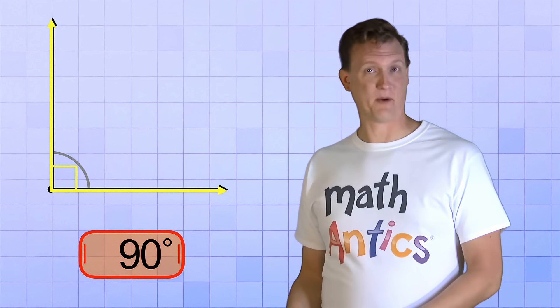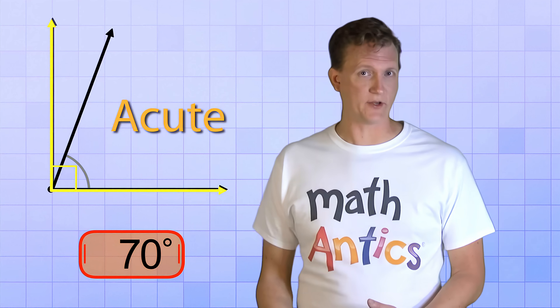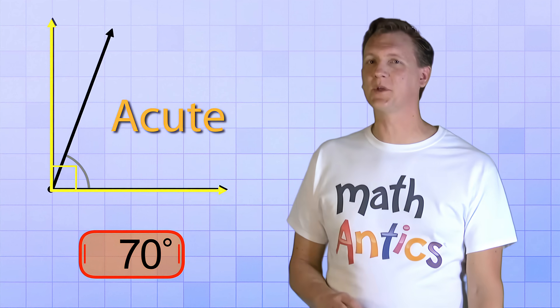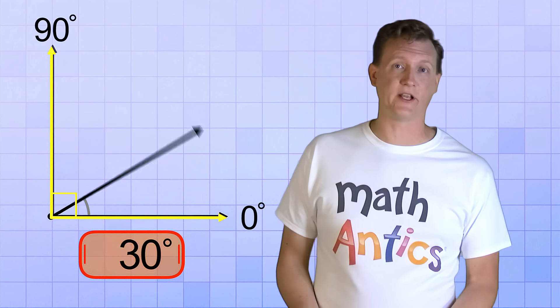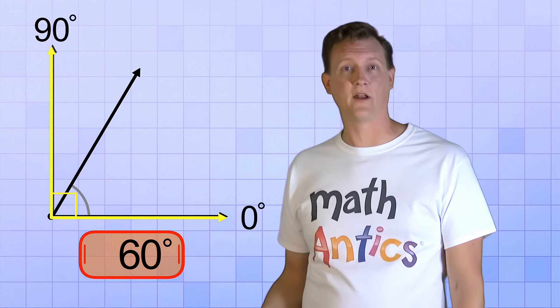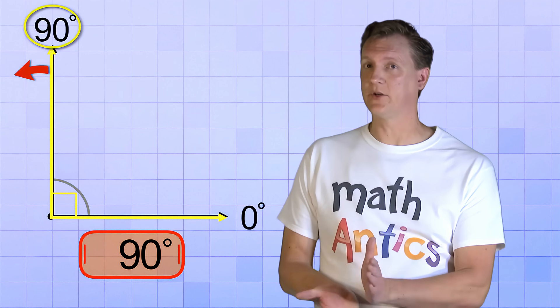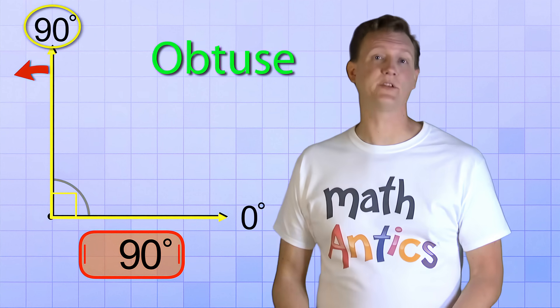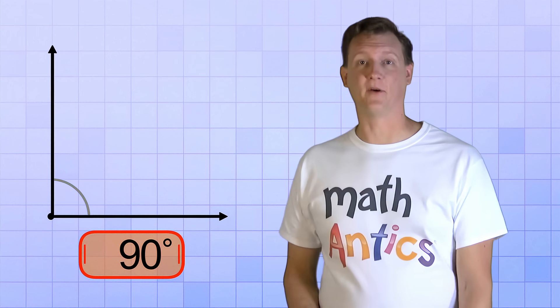Okay, do you remember from our last video that all angles less than a right angle are called acute angles? So that means that all the angles we've seen so far that are between 0 and 90 degrees, like 10, 30, 45, 60, and so on, are acute angles. But if we keep on rotating our ray past 90 degrees, we'll start forming obtuse angles because they're greater than a right angle. Ready? Here we go!